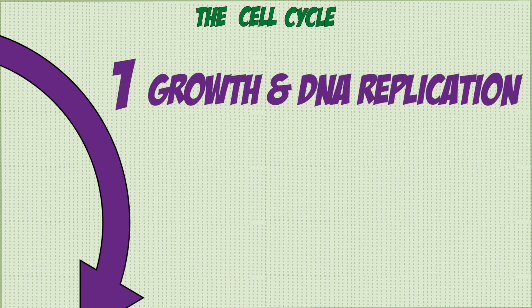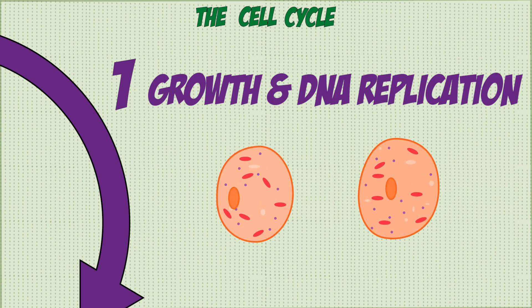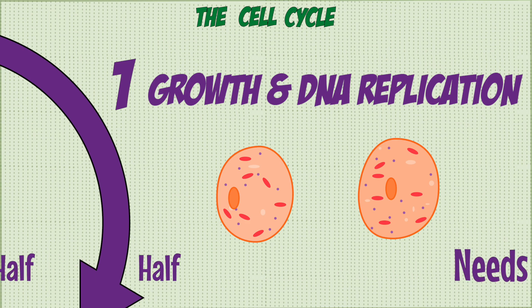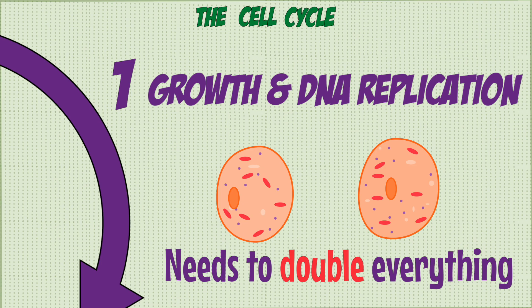The first stage is growth and DNA replication. If you were to divide a cell into two in its normal form, you would only get half of everything inside of it, which wouldn't allow the cell to function properly. So to make sure the daughter cells have the correct number once the cell has actually divided, it needs to double everything inside of it.